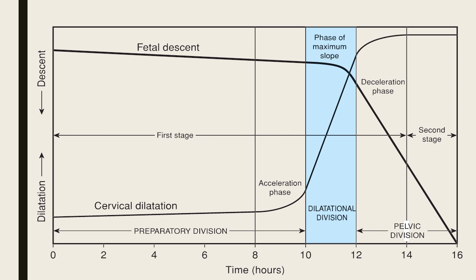When doing a labor curve for a patient in labor, the x-axis represents time or the number of hours of labor. The left side y-axis represents cervical dilatation, numbered from 0 to 10. The right side y-axis represents fetal descent or fetal station, numbered from negative 5 to plus 5.